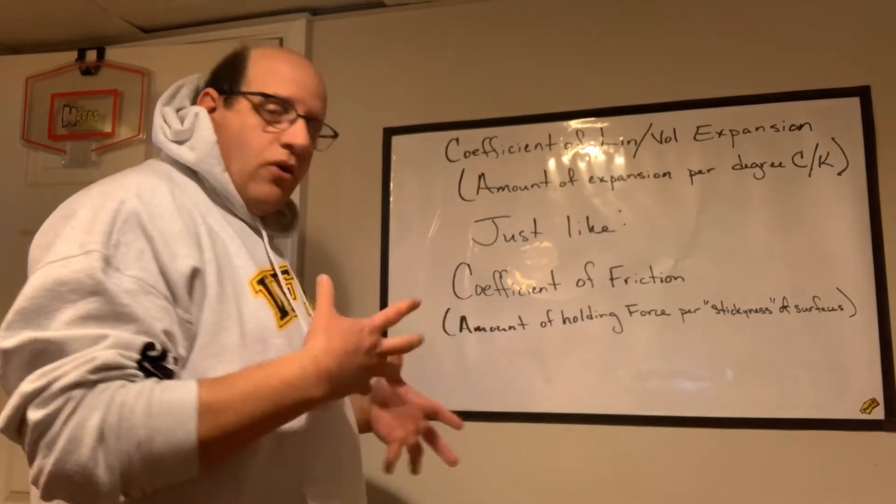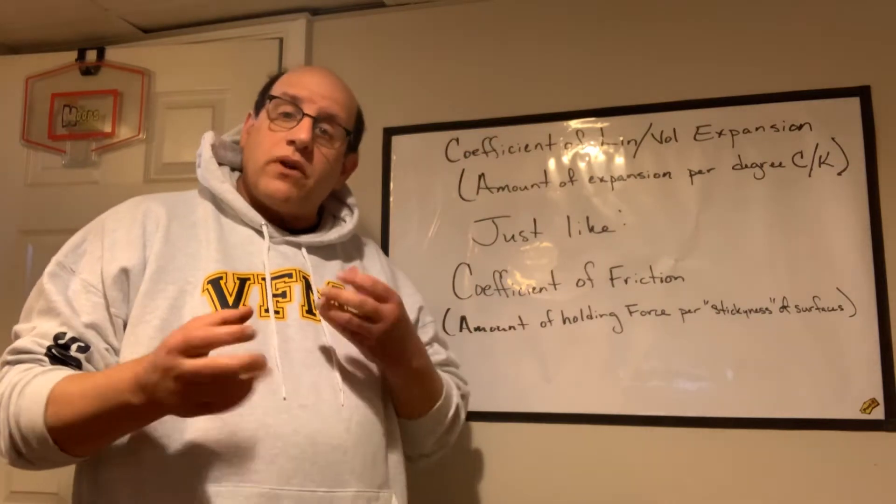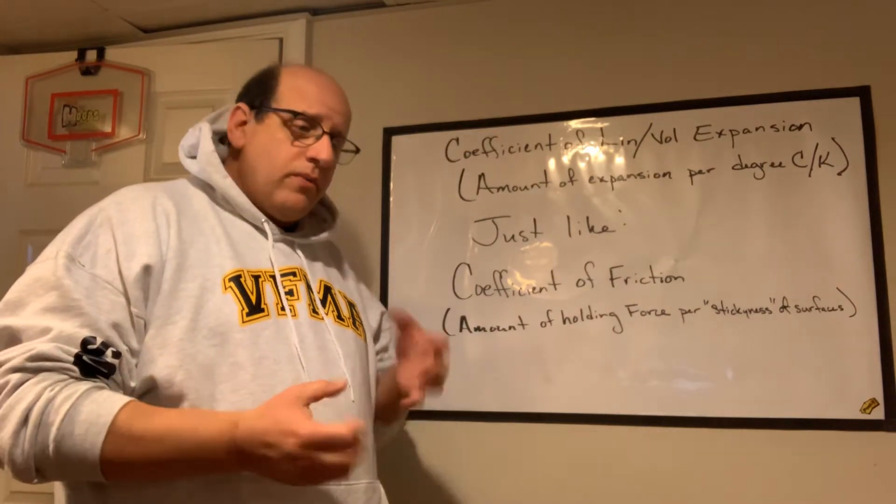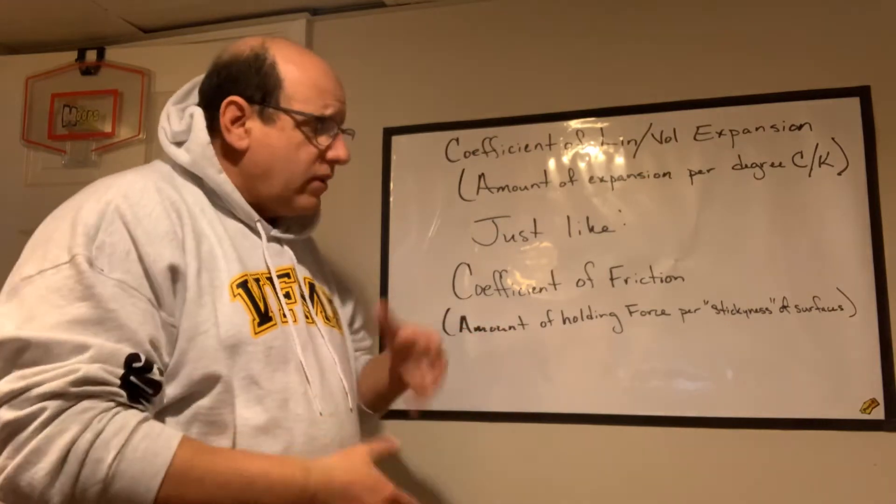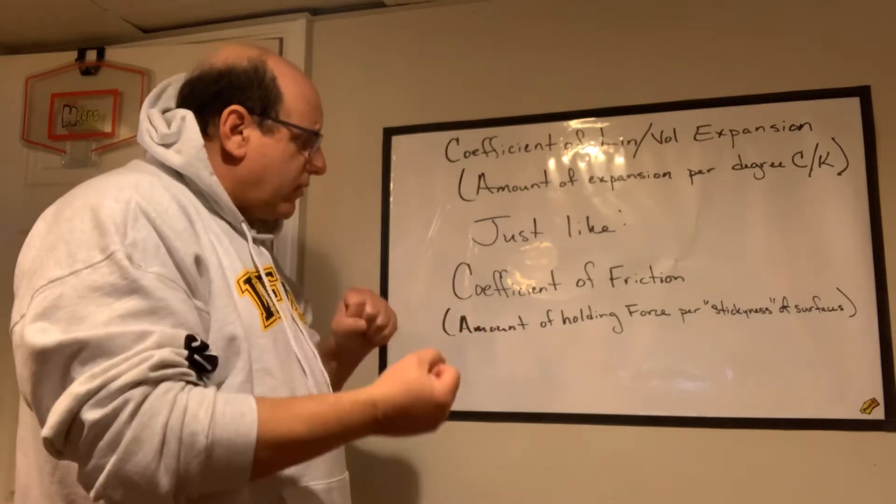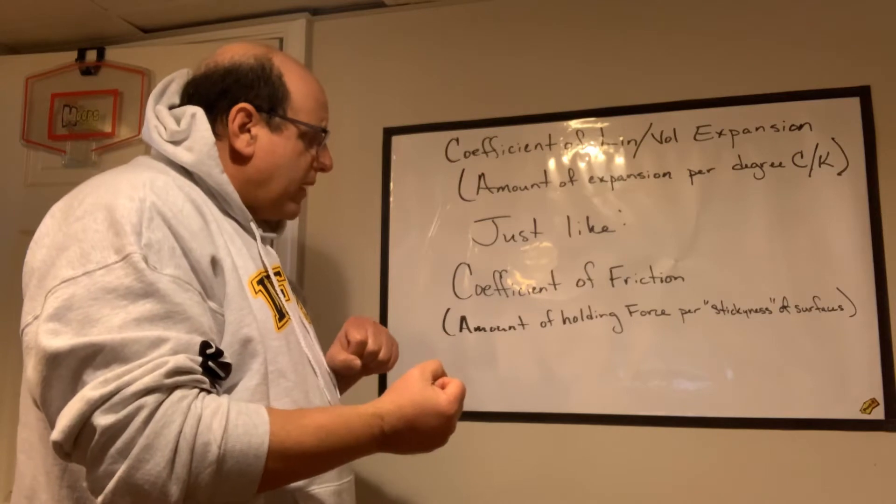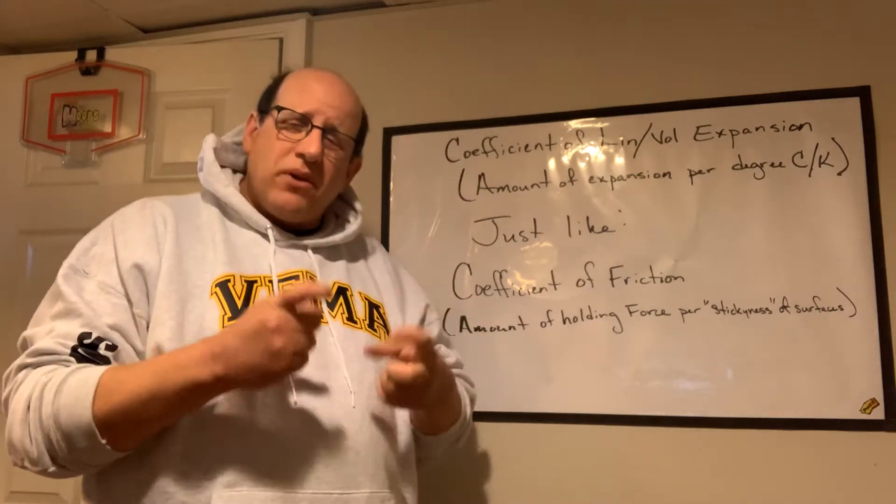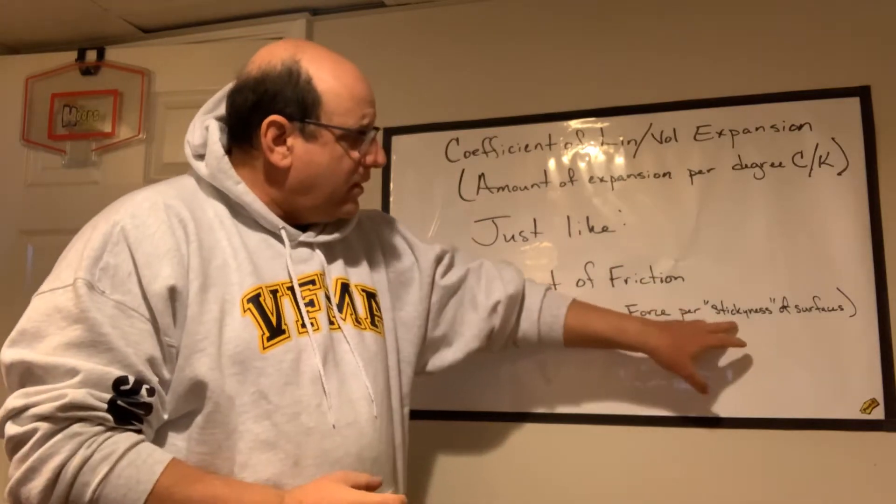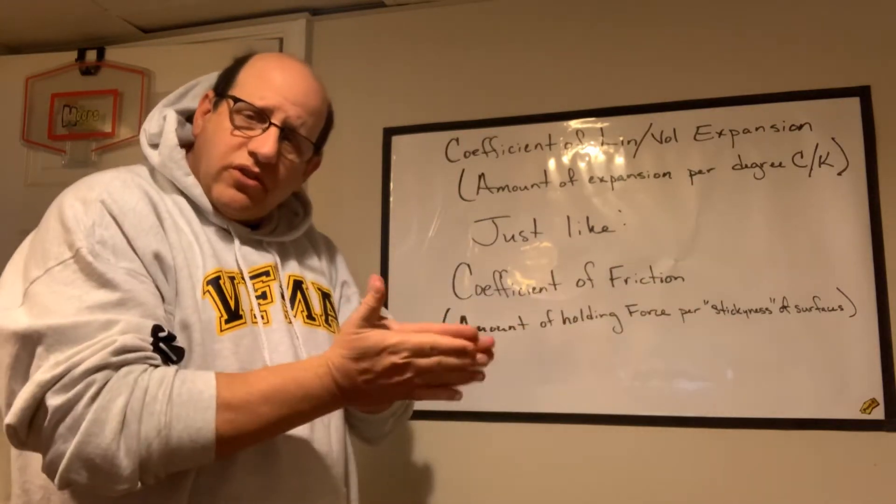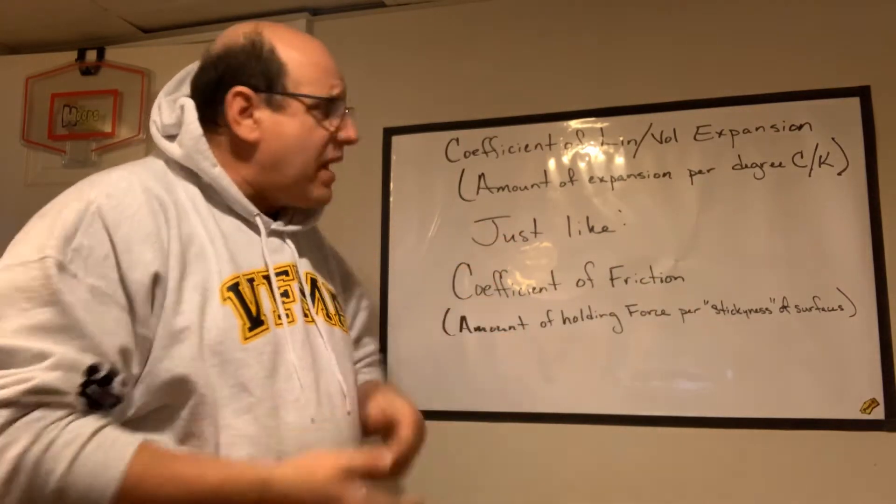It's very much like the coefficient of friction. When we talked about friction earlier, we talked about the surfaces holding against each other and each surface had a different coefficient. And that coefficient is just that number that tells us the amount of stick, the stickiness of the two surfaces and the amount it's going to hold back a little bit.